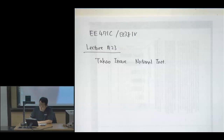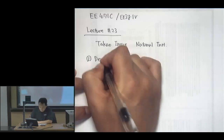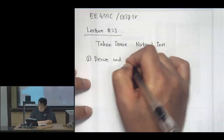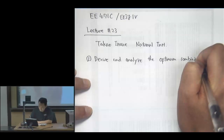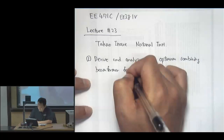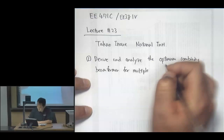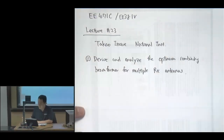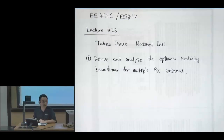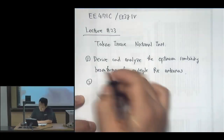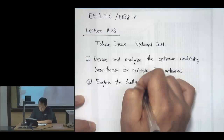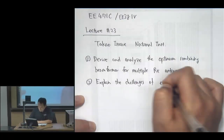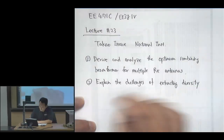Continuing on, the course objective today is to derive and analyze the optimum combining beamformer for multiple receive antennas. I assume you guys started on discussing MIMO communication systems with multiple antennas. The second objective is to explain the challenges of extracting diversity from multiple antennas.